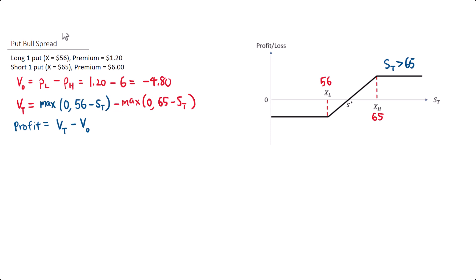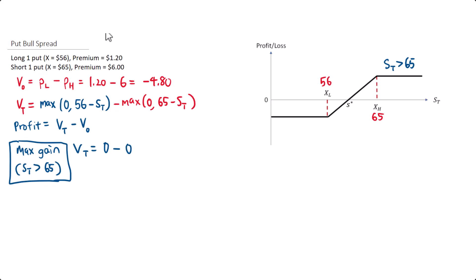When the share price is above 65, both options would be out of the money. So the value at expiration is 0 for the lower strike put minus 0 for the higher strike put, giving a value at expiration of 0. The profit equals the value at expiration minus the initial value of negative $4.80, so the maximum gain is $4.80.